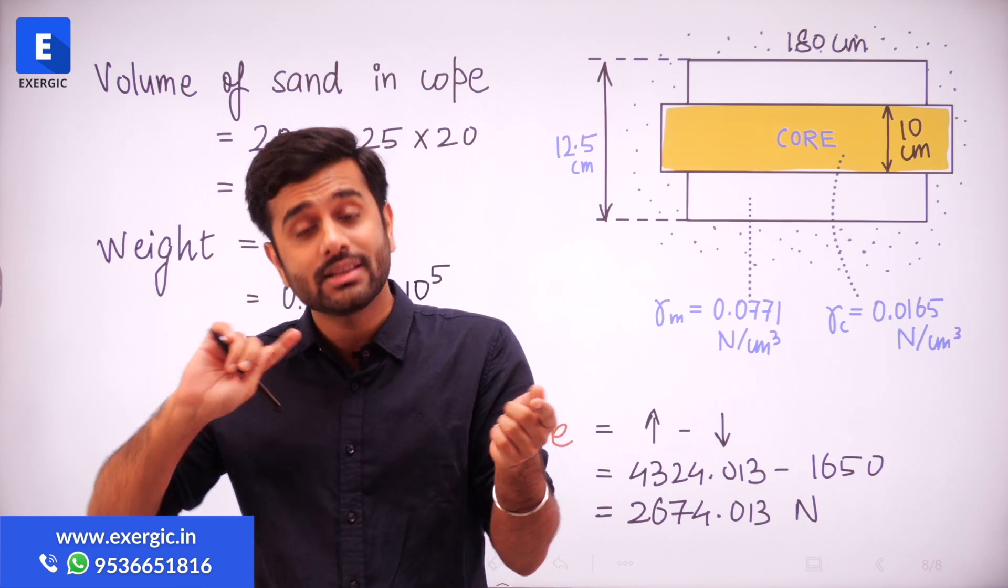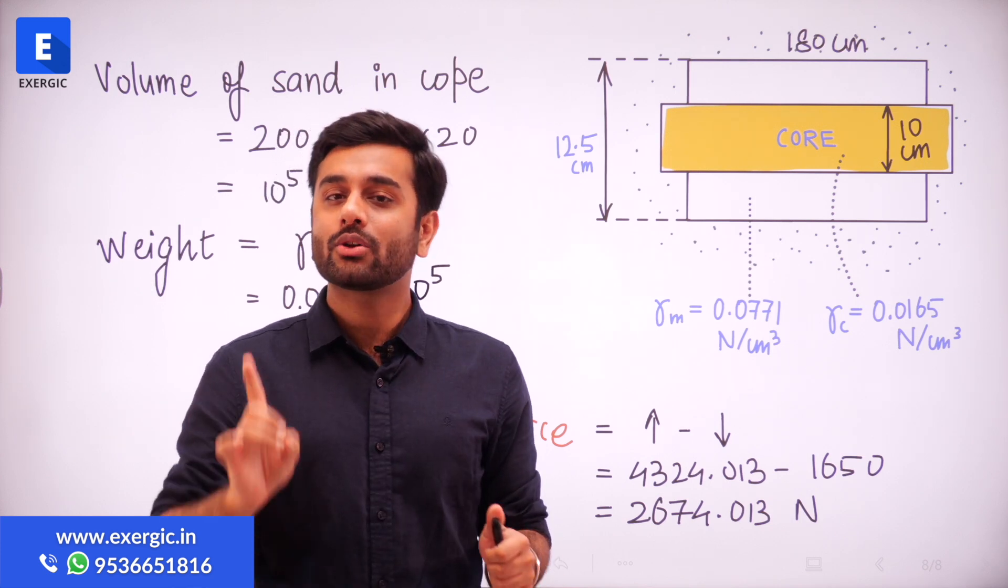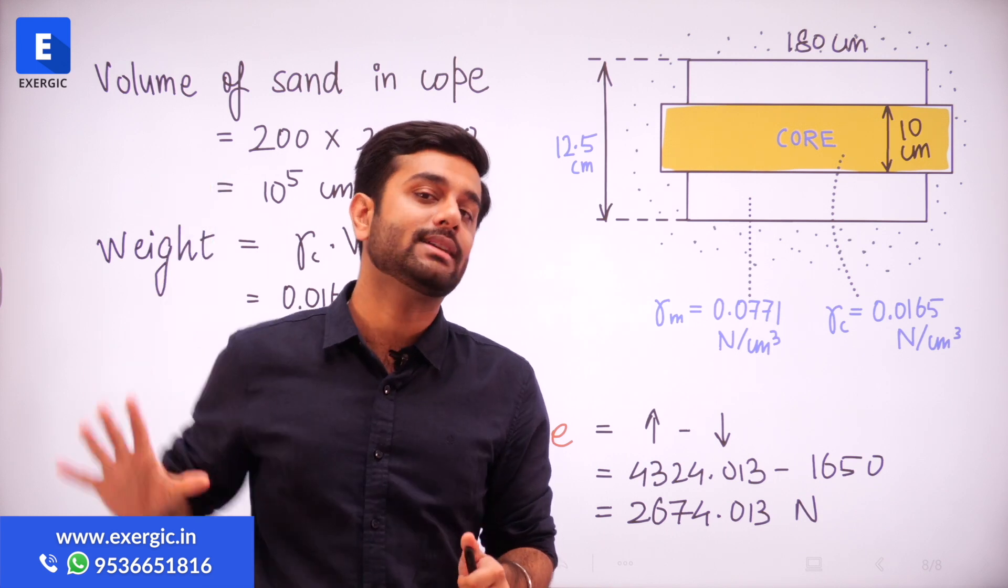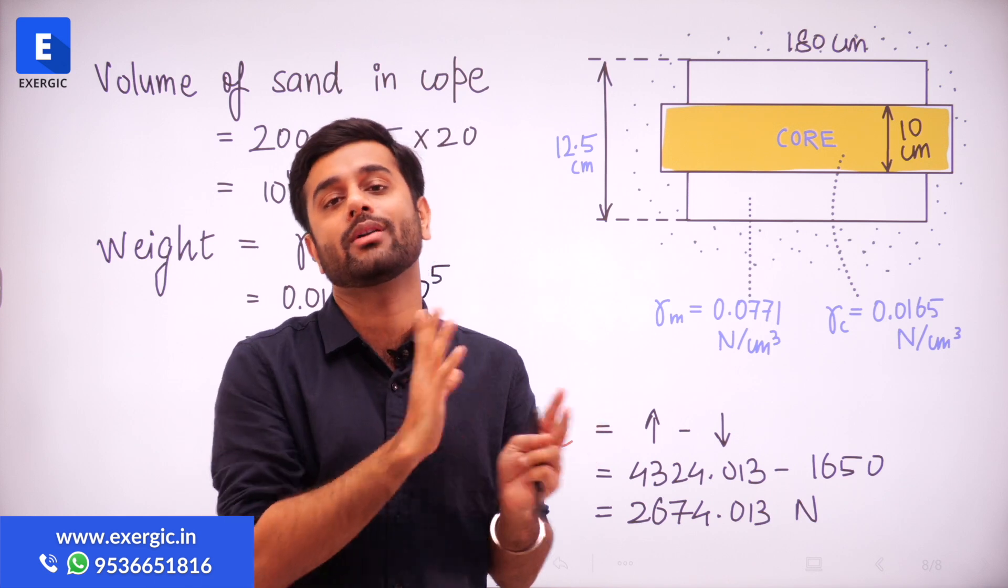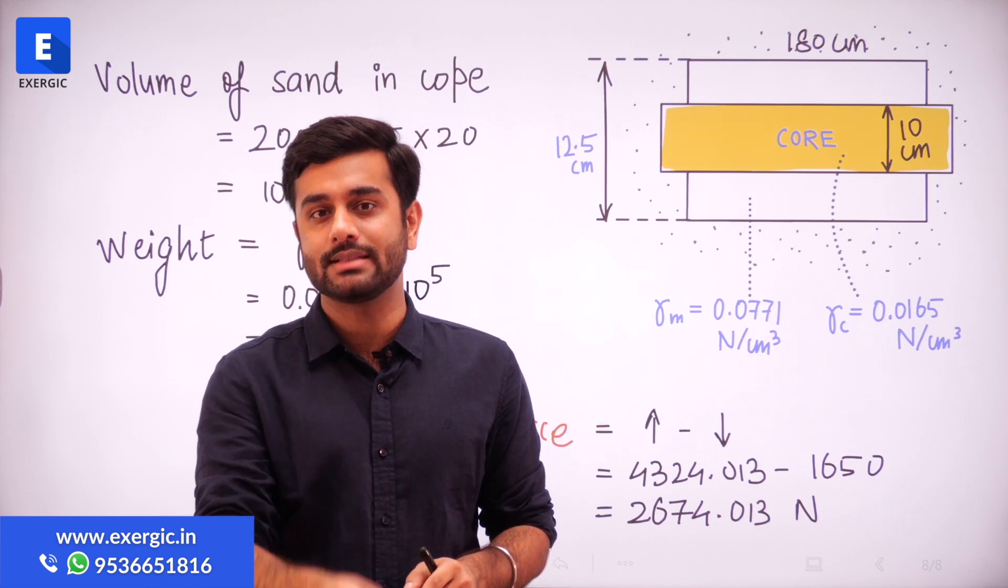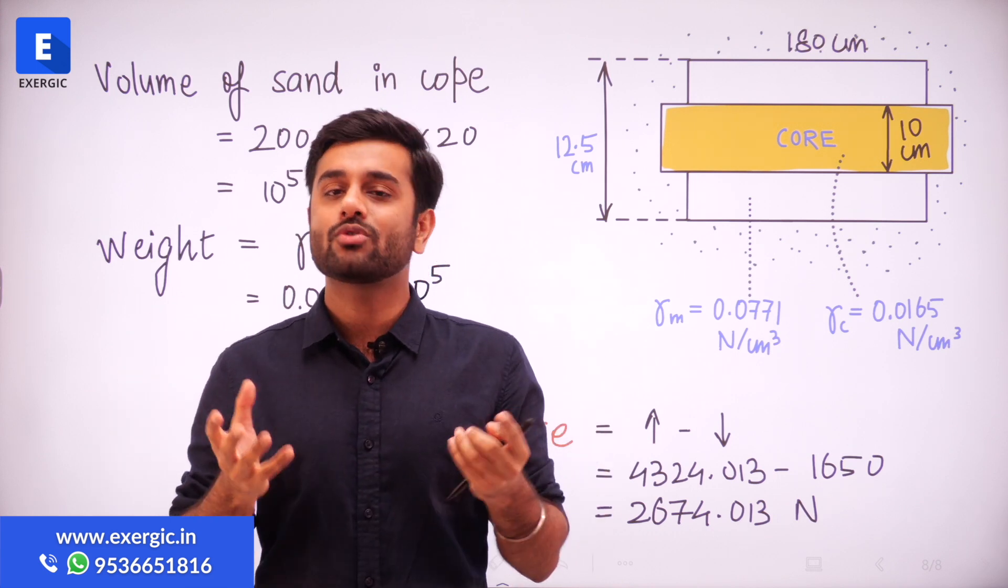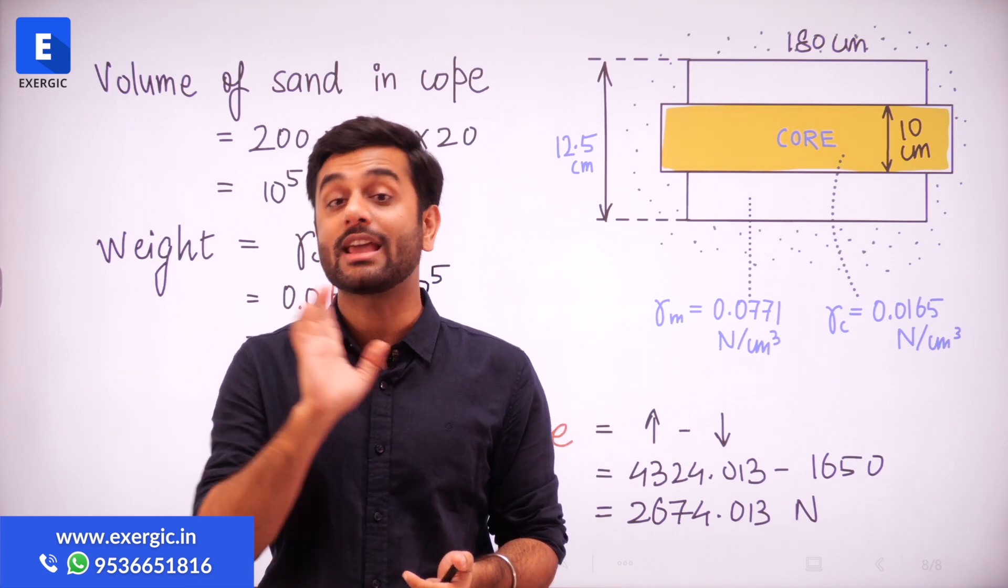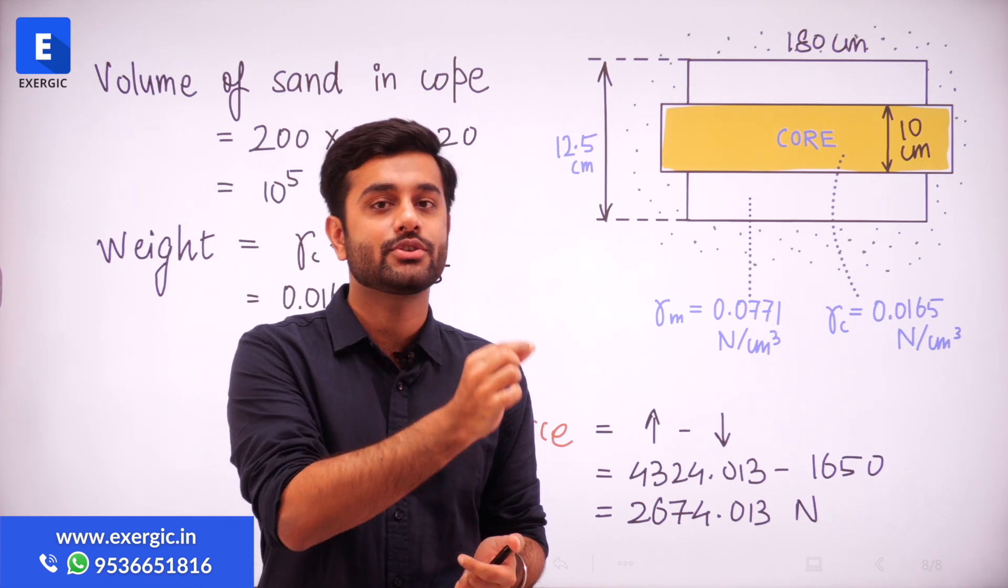In such situation, take the density of core same as the density of molding sand. And it is true in the other way also. If in a question you require the density of core, but question has given you the density of molding sand, it has not mentioned anything about the material or the density of core, then we consider that core is made up of the same material as the molding sand. So obviously, the density will also be same. A very small point, but very helpful in such numericals.